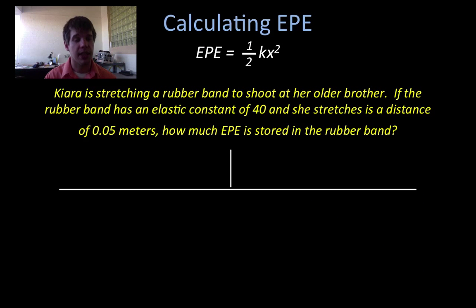We're going to calculate this. Kiara is stretching a rubber band to shoot at her older brother. If the rubber band has an elastic constant of 40 and she stretches at a distance of 0.05 meters, 5 centimeters, how much EPE is stored in the rubber band? So we always start off with our givens. We'll just write those down really quickly. The first thing we see is the elastic constant of 40. So K equals 40. There's no units associated with that. And she stretches at a distance of 0.05 meters. So the x value is going to be 0.05 meters.